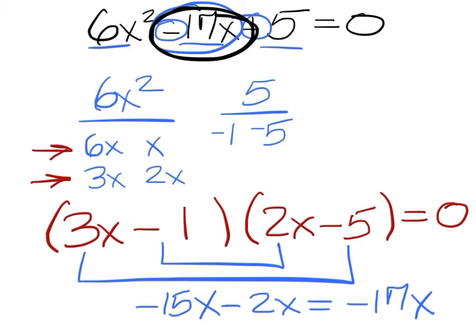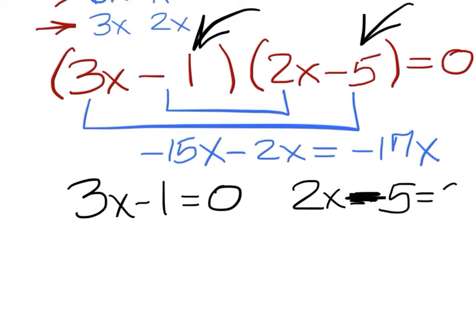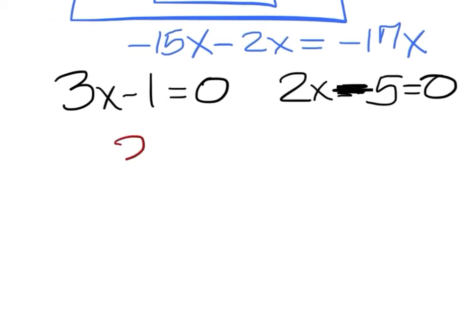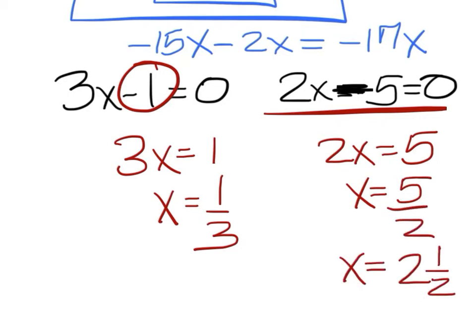So we found it on the first try. If it did not work out, then you have to rearrange your negative one and negative five. But we found it, so we have to set three x minus one equal to zero and two x minus five equal to zero. Three x equals one, we move this to the right, change the sign, and one over three will be x. This one, you move the minus five to the right, make it positive, divide by two. And five over two is the same thing as two and a half. Put your answers in order from least to greatest, one-third or two and a half.